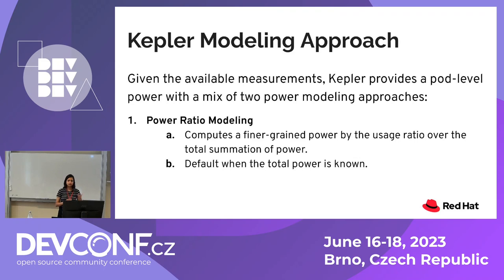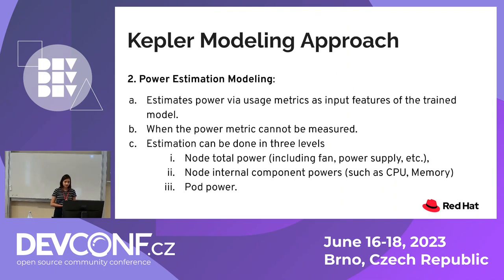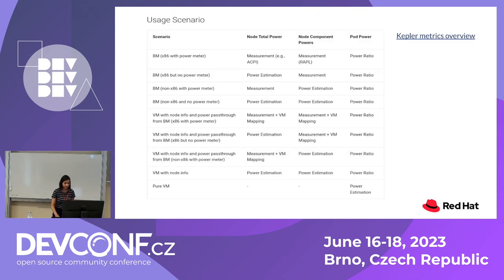How do you decide what models to use? It depends on the available measurements. If you have access to total power, you use power ratio modeling where usage is a ratio of power consumed by the processes to the total. But when power metrics cannot be measured — for example, in the case of a virtual machine — you can estimate power by using usage metrics as input features of the trained model. You can do three levels of estimation: node total power (which includes fan, power supply, and internal components such as CPU and memory), and then pod power.